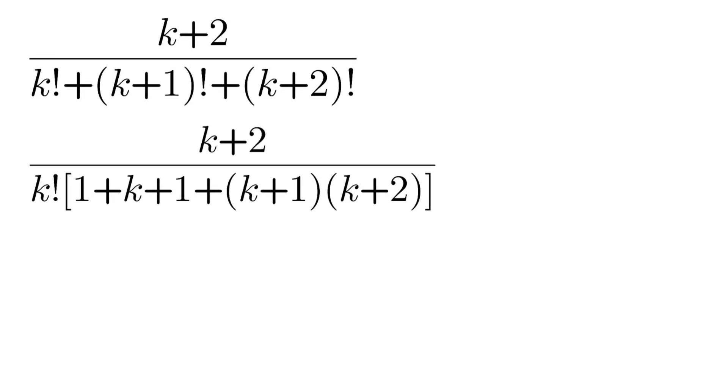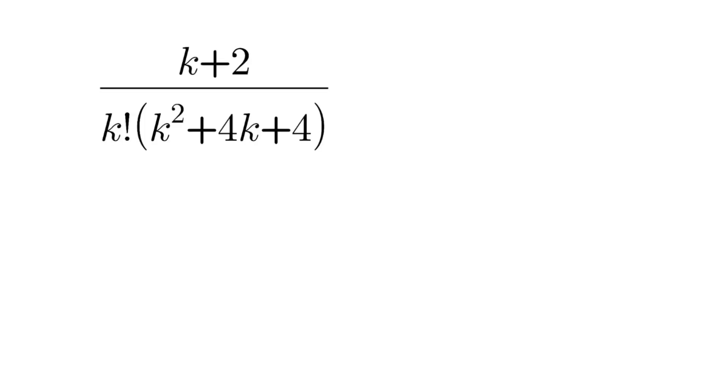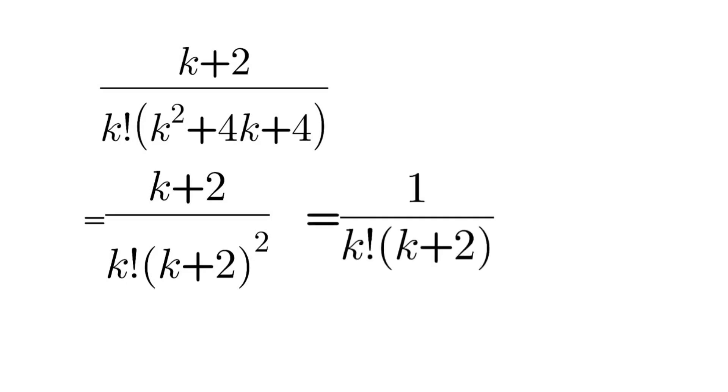Simplifying, we will have this, and then completing the square will get this. So now complete the square which is (k+2) whole square in denominator, then cancelling k+2 in numerator and denominator. This will leave our expression as 1 by k factorial into (k+2) factorial.